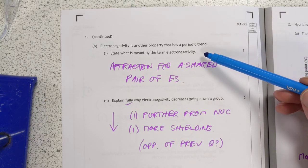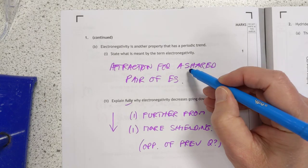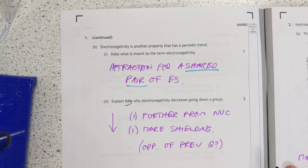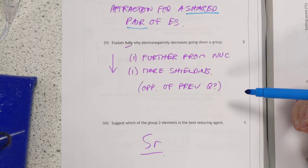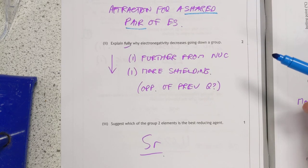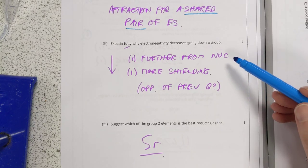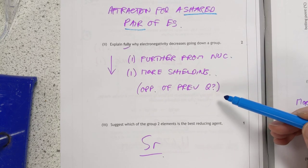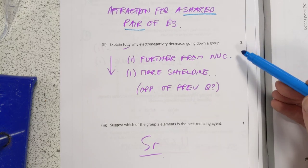Definitions time. Electronegativity is the attraction an atom has for a shared pair of electrons. I'm going to guess that you probably need the shared and the pair because they're getting sticky on definitions these days, the SQA. I've been taking lessons off biology. Explain fully why electronegativity decreases going down a group. The nucleus is further from the shared pair and there's more shielding between the nucleus and the shared pair.